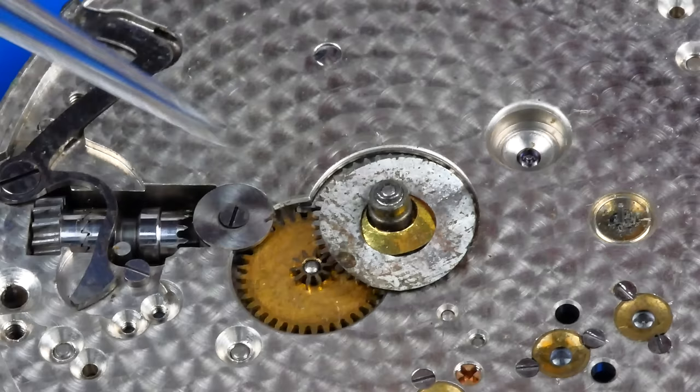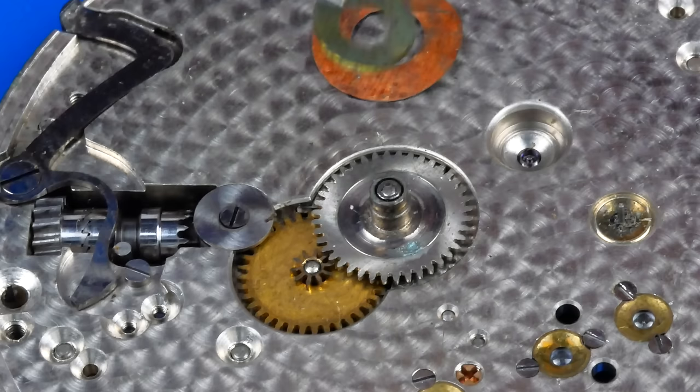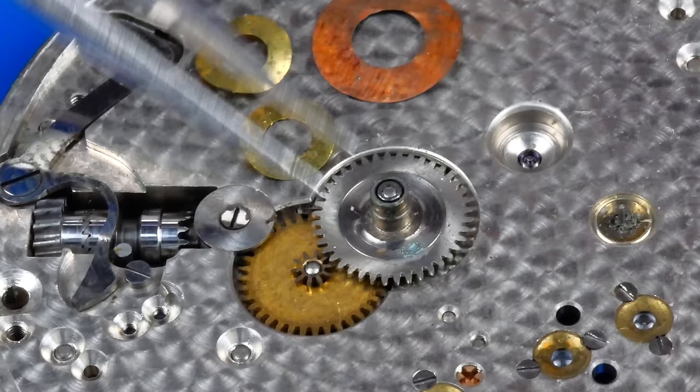This is interesting. Not one, not two, but three dial washers are apparently needed here. I suppose the hour wheel was replaced at some point and maybe it was thinner than the original.